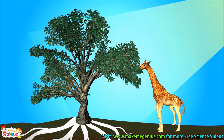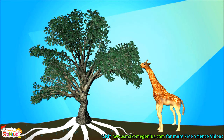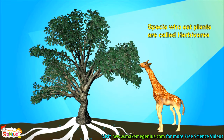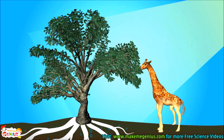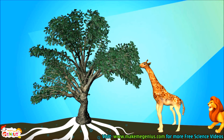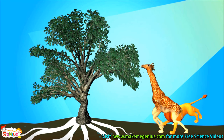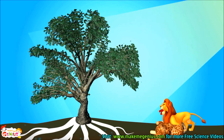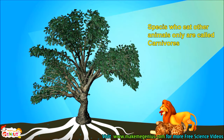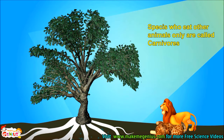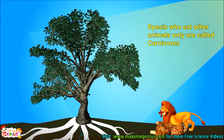Now see, a giraffe is coming. It is eating the plant. Species who only eat plants are called herbivores. A lion is coming — it is attacking the giraffe. It has killed the giraffe and is eating it. Species which eat other animals are called carnivores.